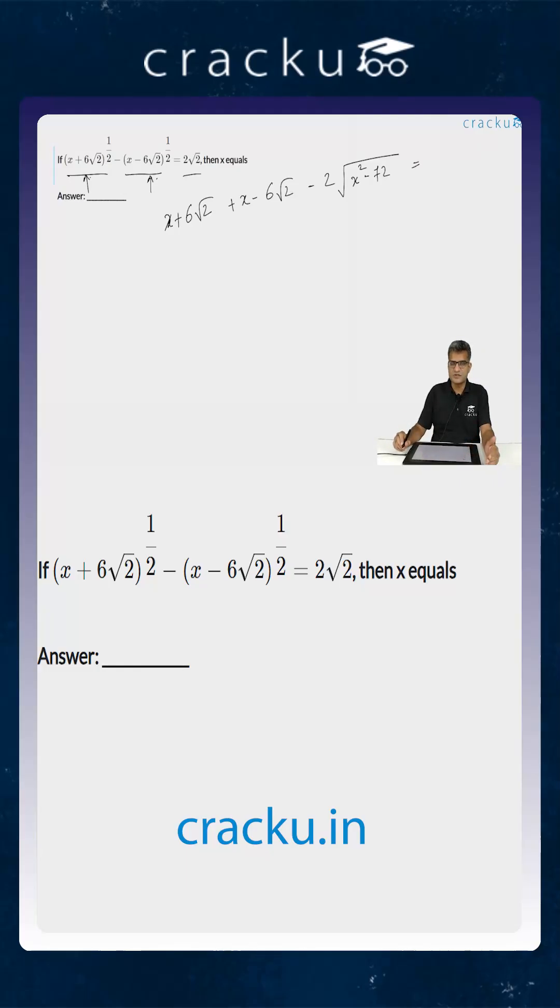This is equal to 2 root 2 whole square. 2 root 2 whole square is 8. You can cancel this, you can cancel this.